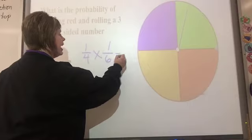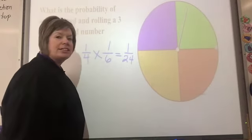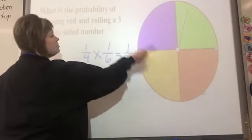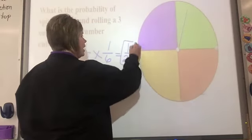Multiply across the top, multiply across the bottom, and then always check to see if you can simplify. So the probability of spinning red and rolling 3 is 1 out of 24.